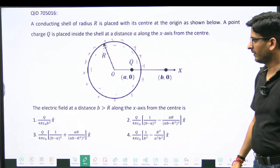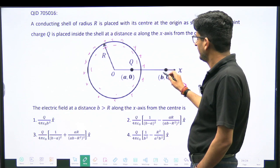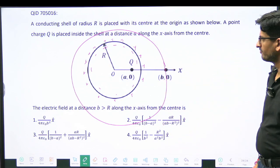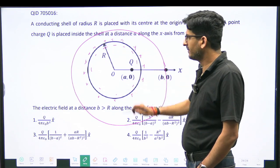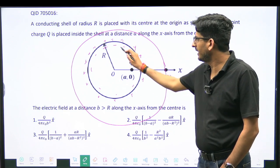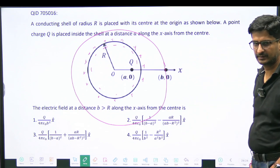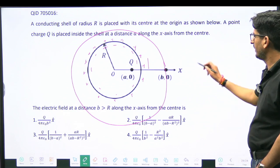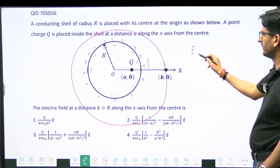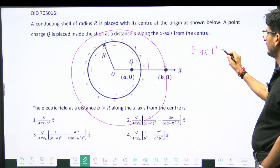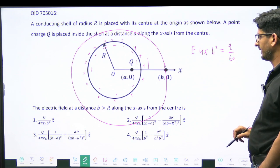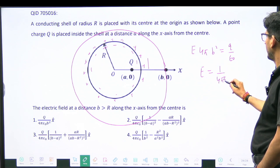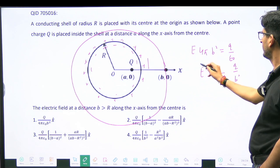If you want to calculate the field here, you would draw a Gaussian surface passing from here. The inside charge will be cancelled because exactly negative q will be on the inner surface and outside charge is plus q. So if you write Gaussian formula it will become E into 4πb² equals q by ε₀. So E equals 1 by 4πε₀ times q by b².